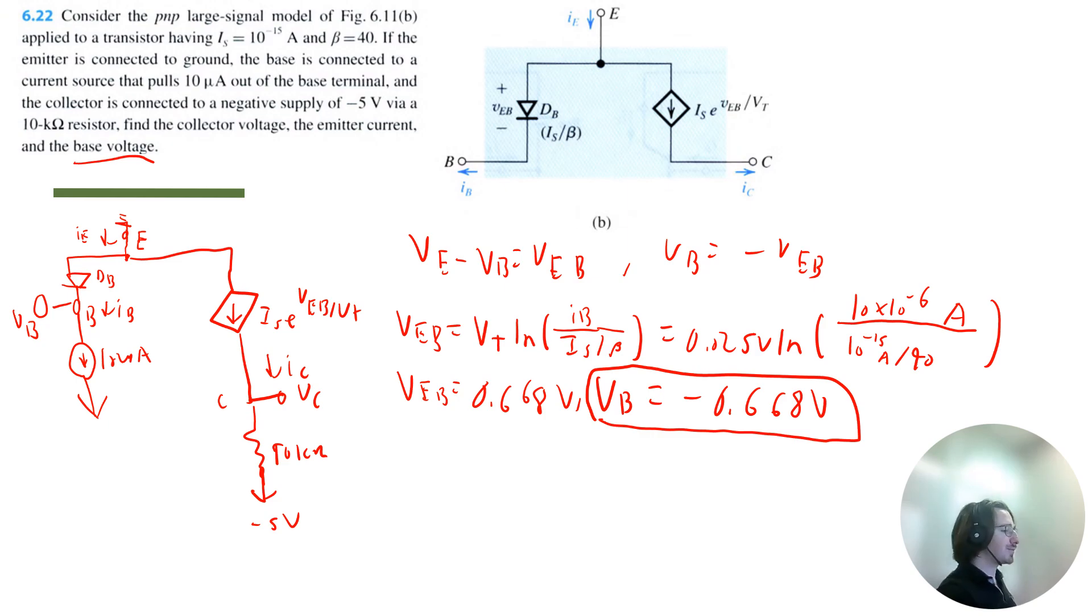Let's solve for the emitter current. So in order to do that, we need to know the collector current. Because we can do the normal analysis to see that IE is just equal to IB plus IC.